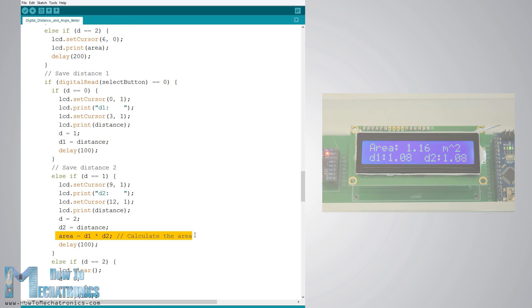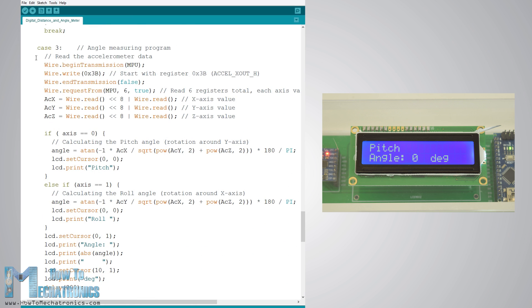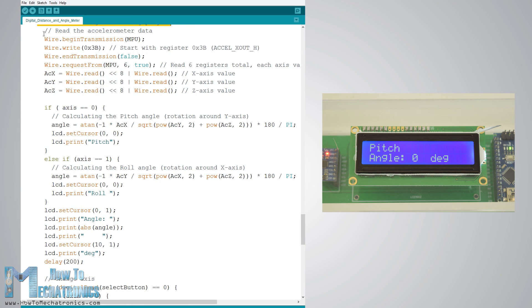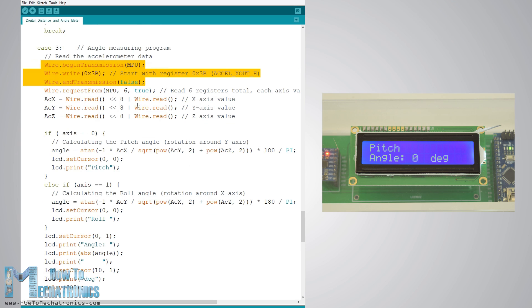The last case is the angle measuring program. Here we need to read the accelerometer data which is actually the strength of the Earth's gravitational field in three different axes X, Y and Z. The value of each axis is stored in two registers so we need to read a total of six registers and combine them in order to get the right value.